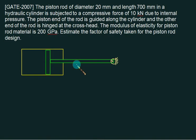A piston rod. This one is called the piston rod with diameter equal to 20 mm. The total length of this rod is 700 mm in a hydraulic cylinder. It is subjected to compressive force of 10 kN due to internal pressure. Here is the oil. This oil will exert a force of 10 kN.